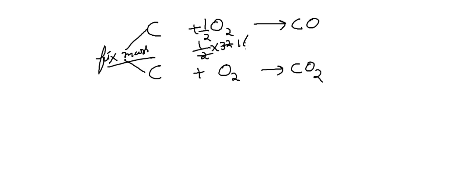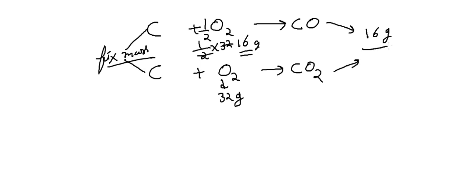In carbon monoxide, the oxygen mass is 1/2 × 32 = 16 grams, and in carbon dioxide the oxygen mass is 32 grams. The ratio of oxygen from carbon monoxide to oxygen from carbon dioxide is 16:32, giving the simple whole number ratio 1:2.